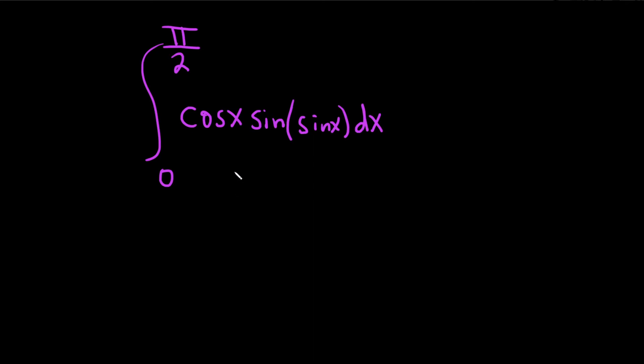So we have to evaluate the definite integral of cosine times the sine of the sine of x from 0 to pi over 2. So in a problem like this we probably should try to make a u substitution.